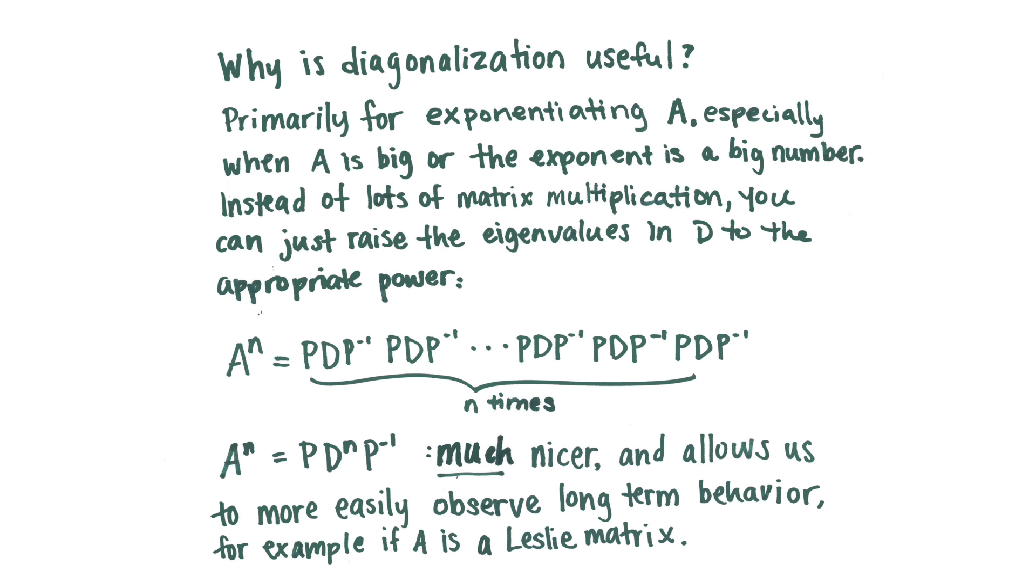And this is a lot nicer than trying to multiply A n times. So this is really useful. If A is a Leslie matrix, which has the percentage change in a time step for a population, and we want to see many, many years in the future, long term behavior of that population, it's much easier to just exponentiate scalar eigenvalues instead of an entire matrix.